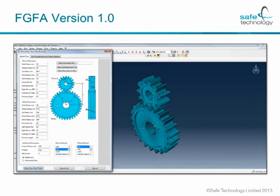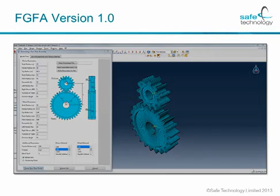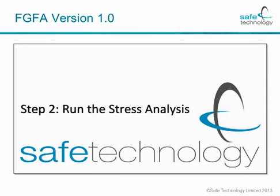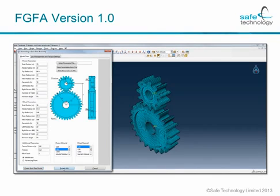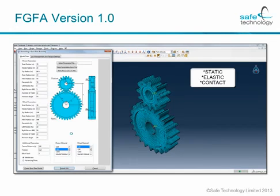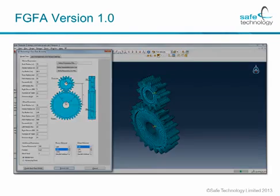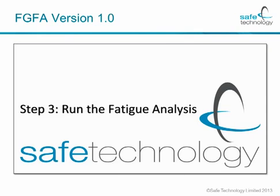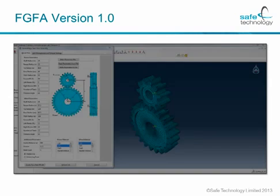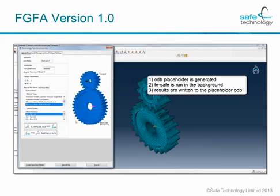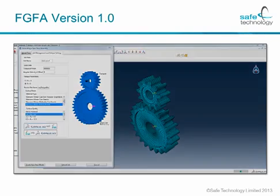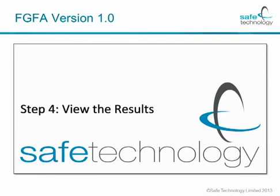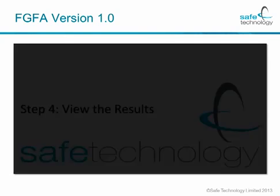The mesh we have chosen is clearly not appropriate for an entire stress analysis, but it serves the purpose of showing how the entire integration can be done. The next step is to run the stress analysis — all you do is press the button 'submit job', which uses a static analysis in the elastic domain and it uses contact. Once you have the results from the stress analysis, you can now run the fatigue analysis. The way this is done is that an ODB placeholder is generated, FE-Safe is run in the background, and the results are written back to the placeholder specified.